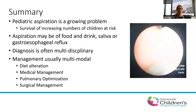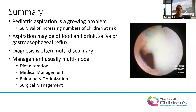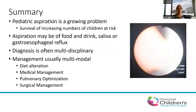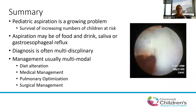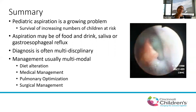In summary, pediatric aspiration is a growing problem — we see it more commonly as increasing numbers of children who are predisposed to aspiration survive. Aspiration can be of food/drink, saliva, or reflux, and sorting out which of those is important because it influences management. The diagnosis is multidisciplinary and done through multiple modalities, as is the management. We think of management in a stepwise fashion: repair anything anatomic first, then use a combination of diet alteration, medical management, pulmonary optimization, and surgical management for ongoing sialorrhea if present.